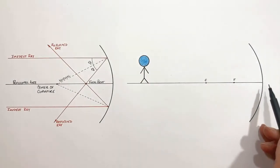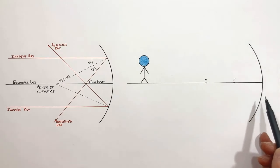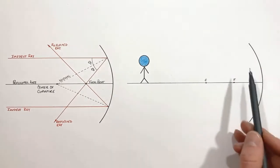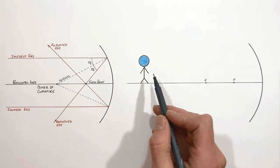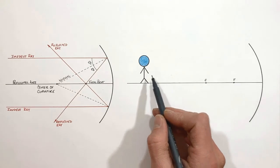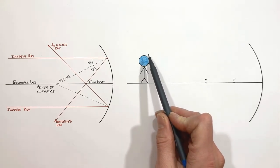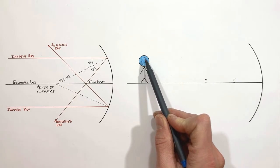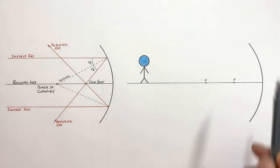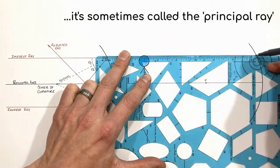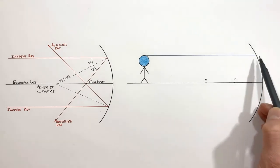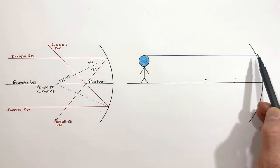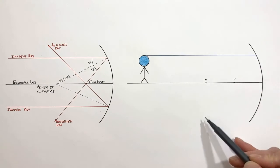Here we have a person standing in front of a concave mirror. What a ray tracing diagram does is identify where the image of this person will form in front of the mirror. When we draw a ray tracing diagram there are three incident rays which we need to track. The first incident ray travels from the top of our object — in this case a blue-headed person — parallel to the principal axis toward the mirror. When this ray traveling parallel to the principal axis strikes the mirror, it is going to bounce off and pass through the focal point.